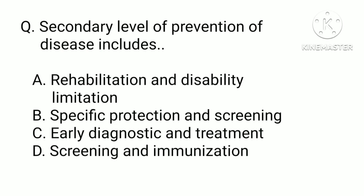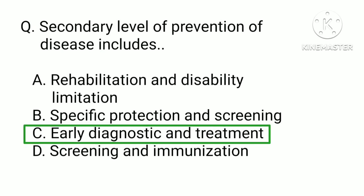The secondary level of prevention of disease includes: a) rehabilitation and disability limitations, b) specific protection and screening, c) early diagnosis and treatment, or d) screening and immunization. The correct answer is c) early diagnosis and treatment.